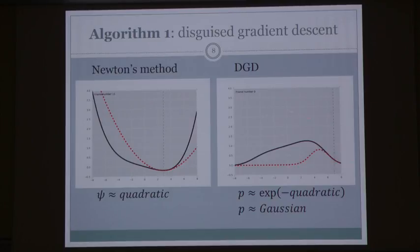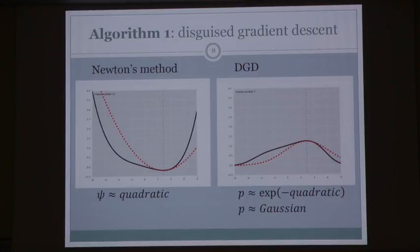Algorithm number one does the same thing but with the exponential of those quadratics — i.e., Gaussians. We keep iterating until we reach a fixed point, which is the Laplace approximation. So algorithm number one iterates Gaussian approximations until it computes the Laplace approximation.